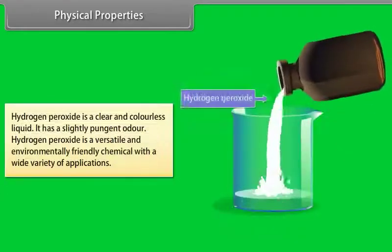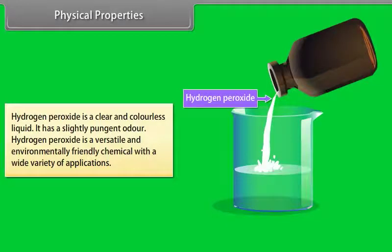Physical properties: Hydrogen peroxide is a clear and colorless liquid. It has a slightly pungent odor. Hydrogen peroxide is a versatile and environmentally friendly chemical with a wide variety of applications.